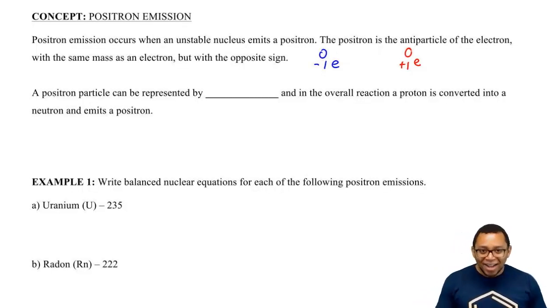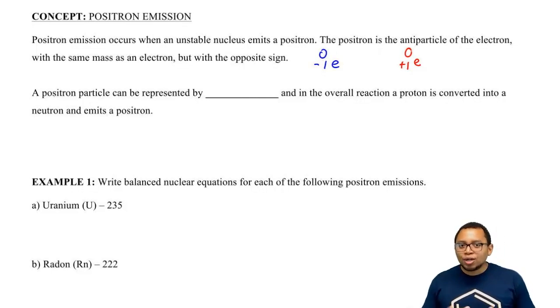So a positron is considered just a positive electron. I know this is weird, but remember, we're dealing with nuclear reactions. So a lot of unaccustomed things that we are not used to seeing do occur. And one of them is this positron.